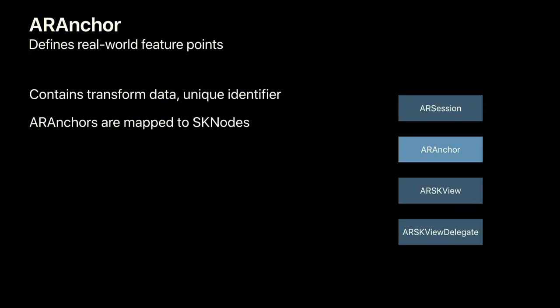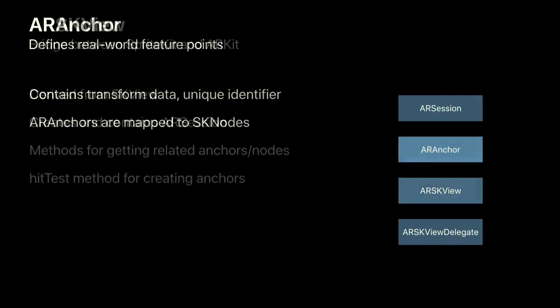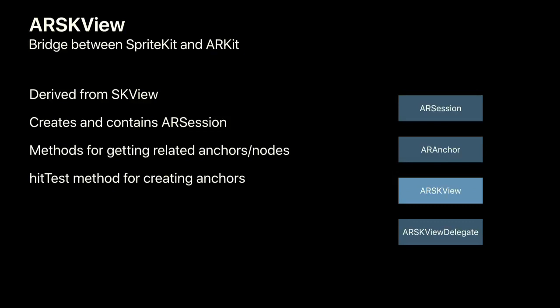ARKit defines real-world features through ARAnchor, which represents a position in the real world and contains transform data plus a unique identifier. ARKit maps ARAnchors to the SK nodes we provide to render content. ARKit interacts with SpriteKit through ARSKView, derived from SKView. It creates and contains the ARSession, so you don't need to create it manually. It also has a hit test method — your primary way of creating anchors — which takes a point on your device's screen and shoots a ray through it, looking for the nearest real-world point.